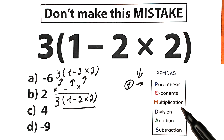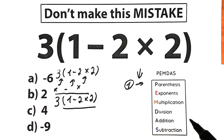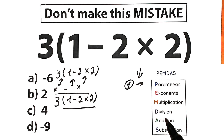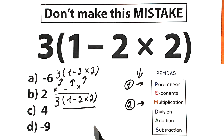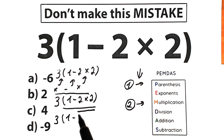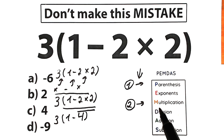As I said before, PEMDAS works from the top to the bottom, meaning higher position means higher priority. Multiplication has a higher position than subtraction, so multiplication has higher priority. Our second step is multiplication: we multiply 2 times 2. Now we have 3 times, in parentheses, 1 minus 4. We complete our second step — multiplication.